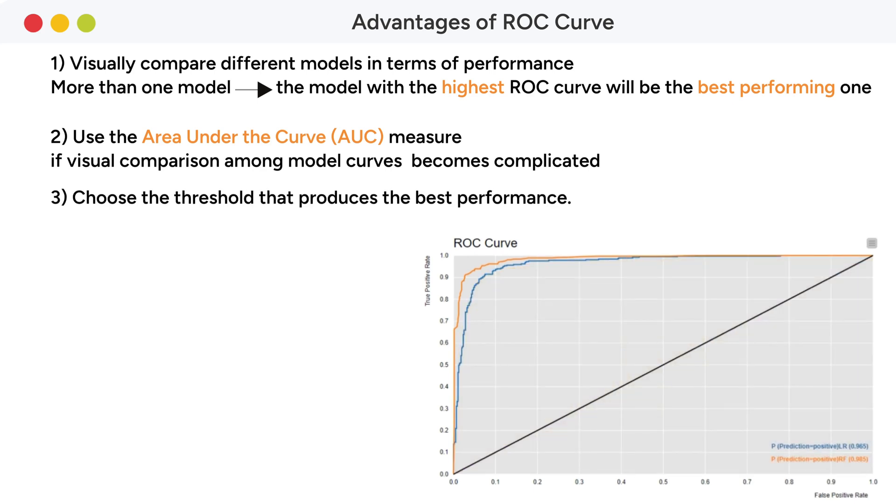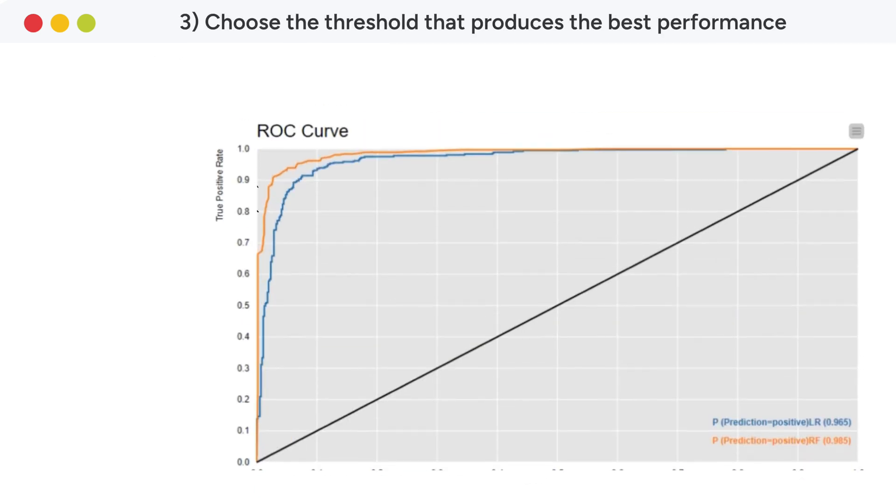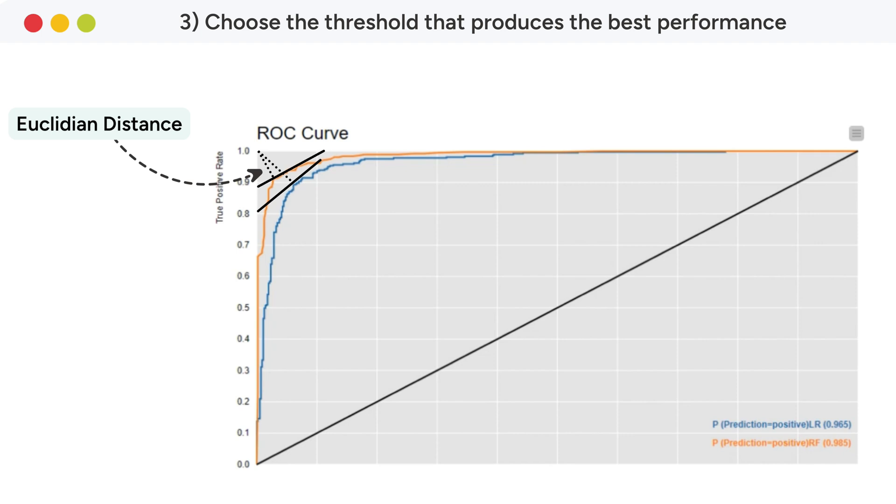Thirdly, the ROC curve allows us to choose the threshold that produces the best performance. One method to select the optimal threshold is to minimize the Euclidean distance between the curve and the point on the top left corner, indicating perfect model performance. The point in the curve that minimizes this distance is the tangent point shown here.